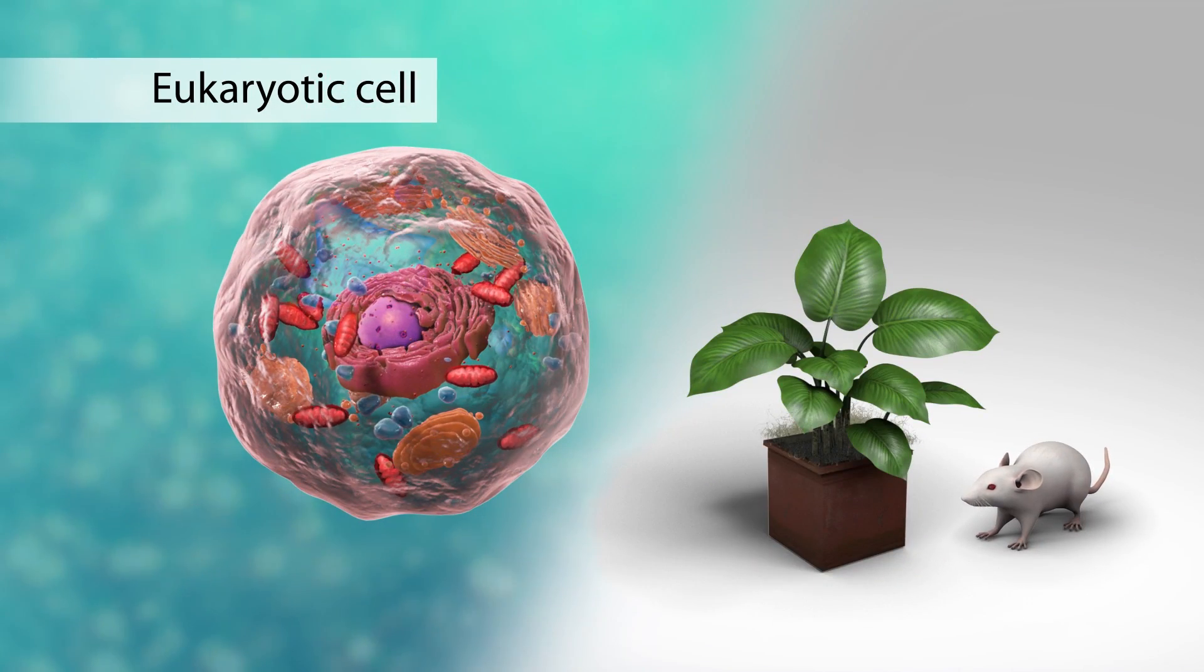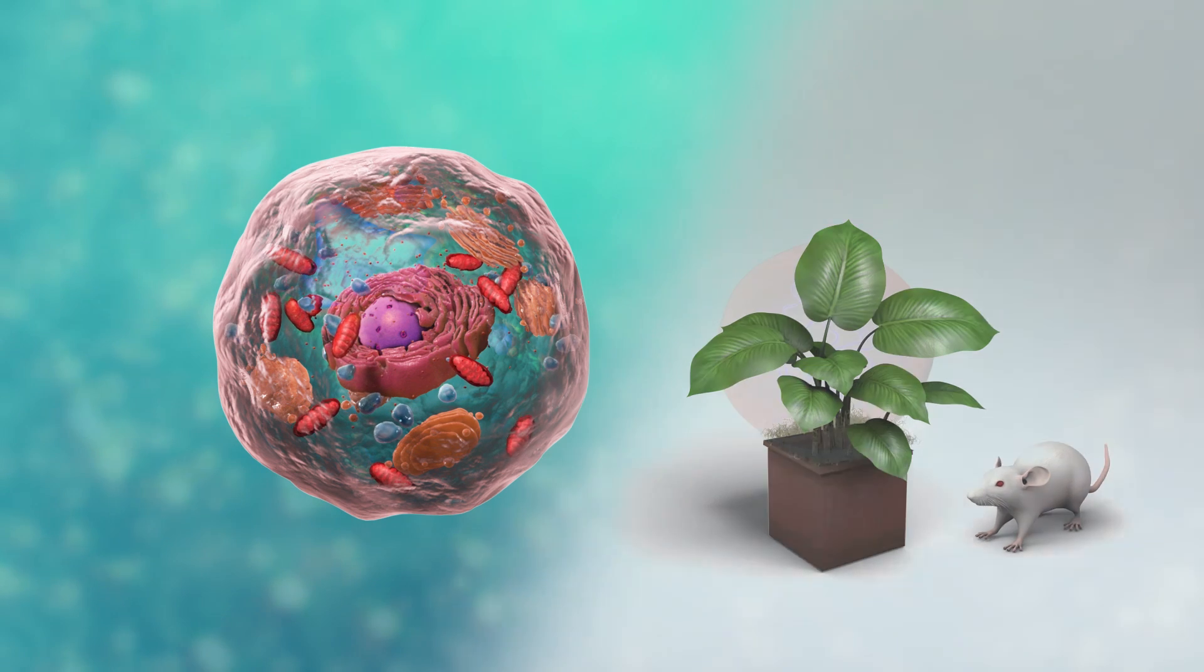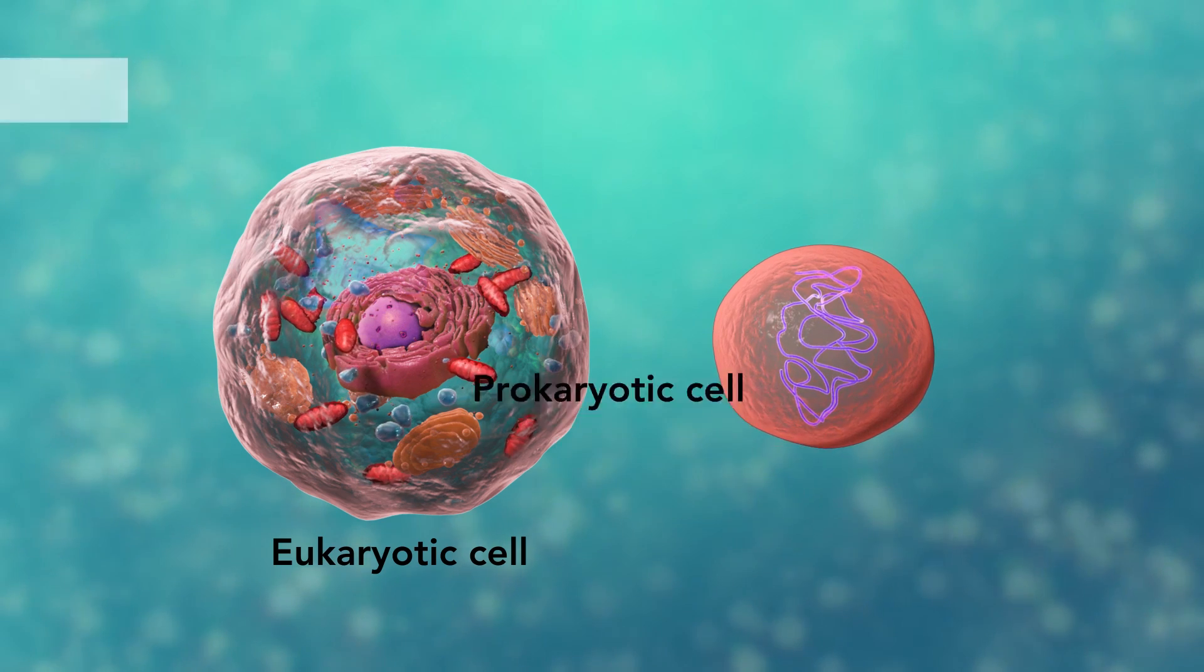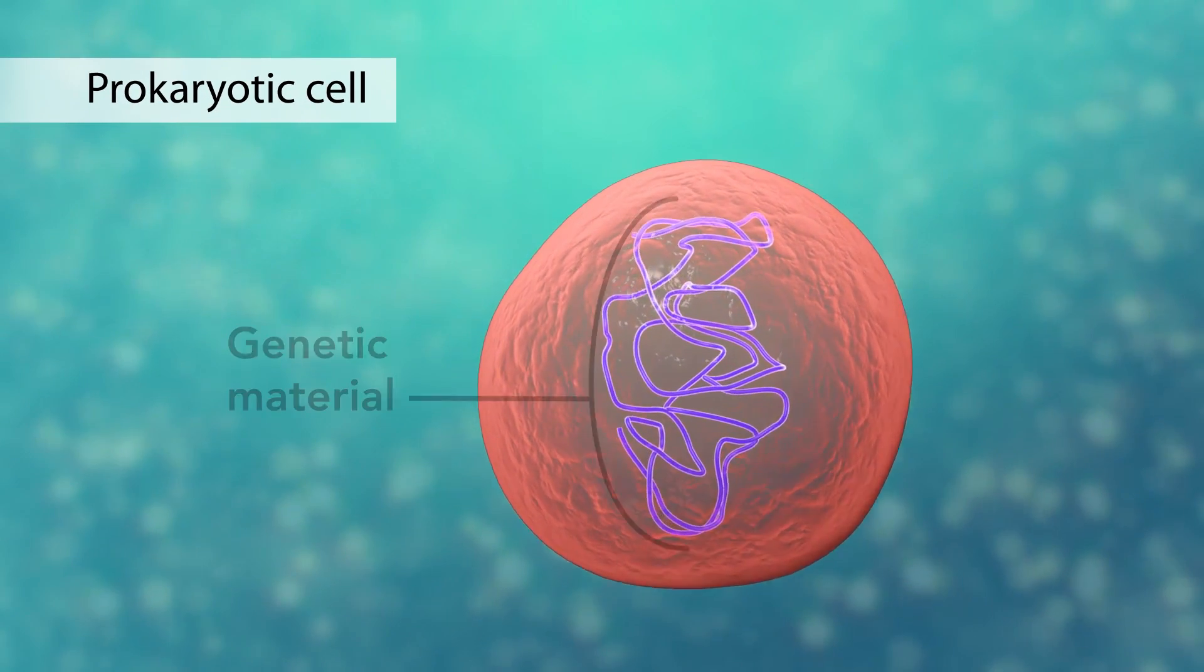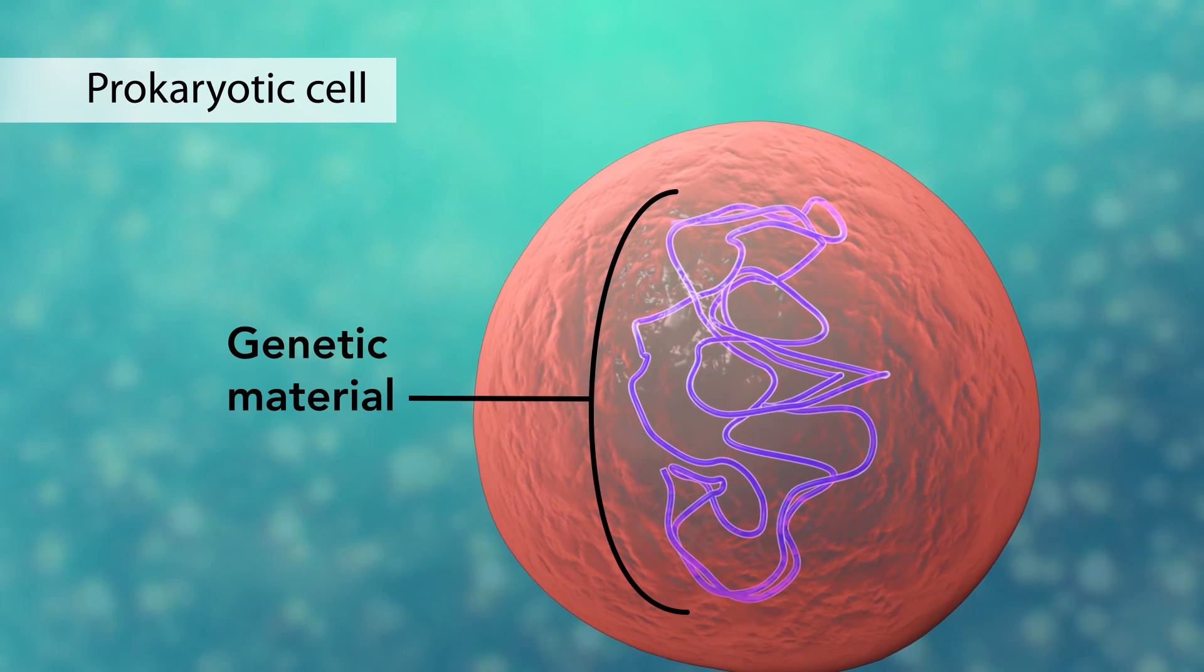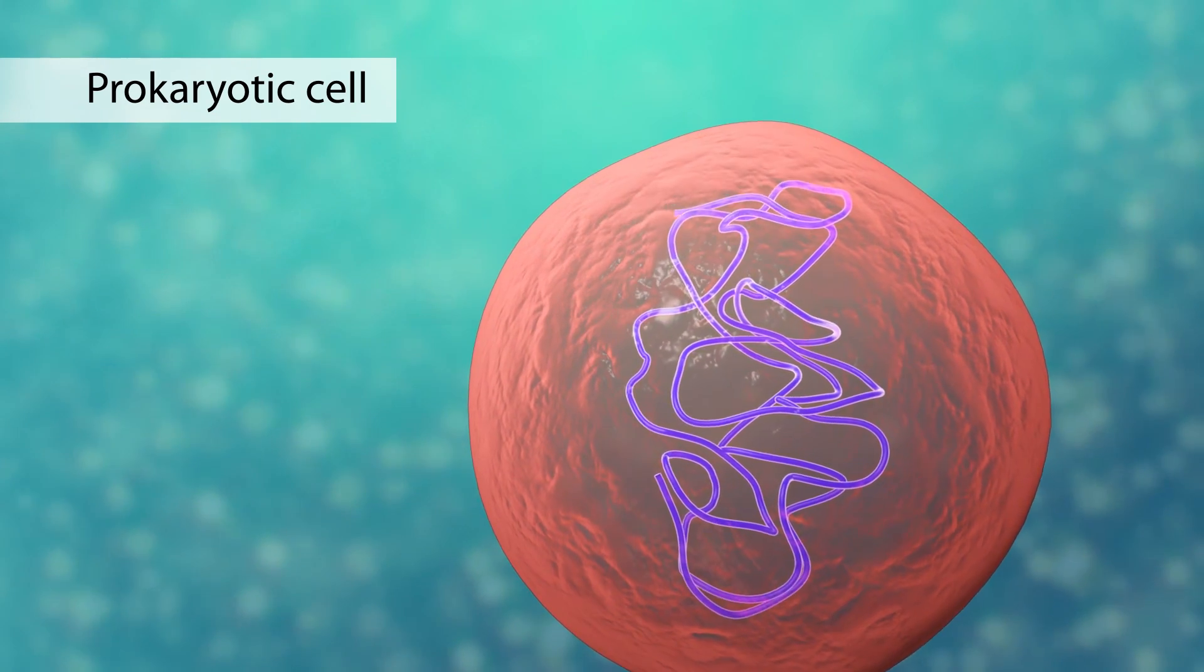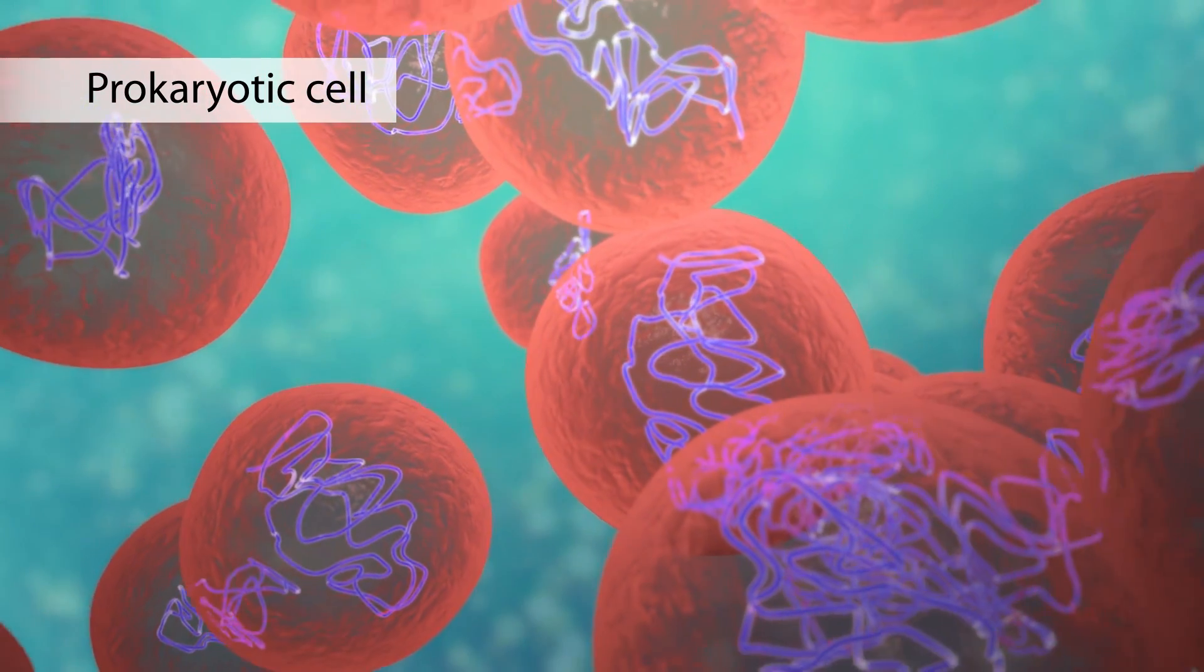Such as those found in plants and animals. The second category is prokaryotic cells. They don't have a nucleus or membrane-enclosed organelles. They do have genetic material, but it's not contained within a nucleus. Prokaryotic cells are always one-celled or unicellular organisms, such as bacteria.